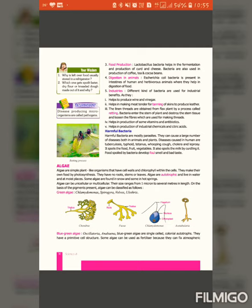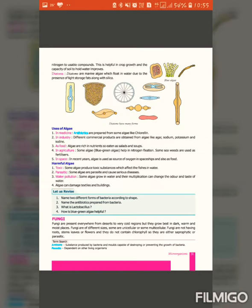So algae plays an important role in our life as well as in crop production. Now we will talk about blue-green algae. Because nitrogen is essential for the growth of the crop and the capacity of the soil, they also help to improve the soil. The third type of algae is called diatoms.